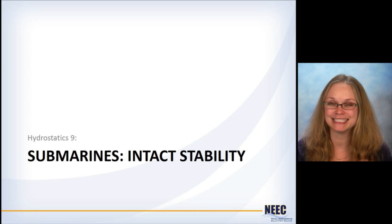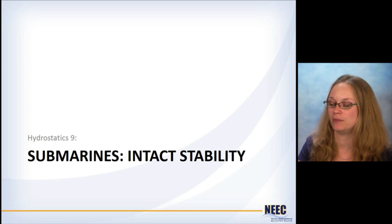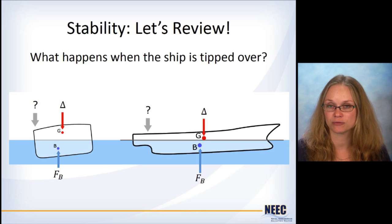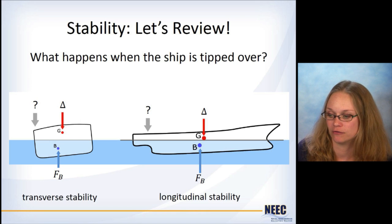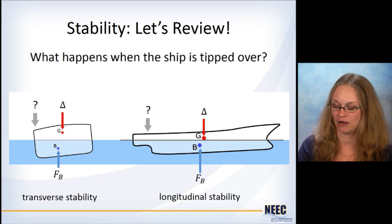As I talked about before with the surface ships, it is not enough to have your submarine be in static equilibrium. We also have to know whether or not it is stable. And that's because we're going to talk about intact stability. So in general, stability is just what happens when the ship or the submarine is tipped over. And we have transverse stability and we have longitudinal stability.